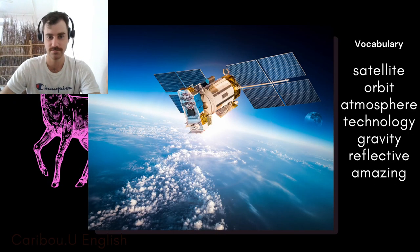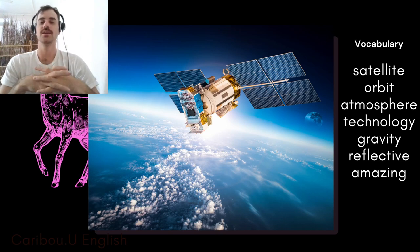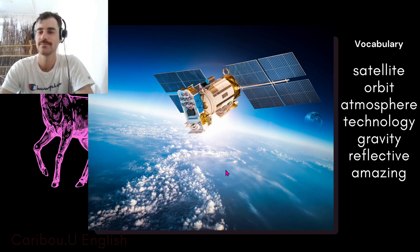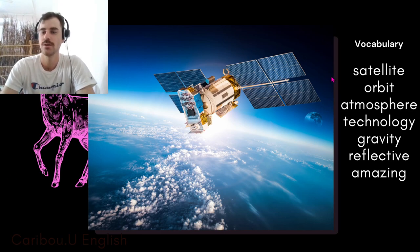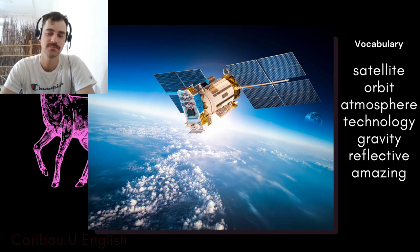The next picture is also on the theme of space, but it has some new words: satellite, orbit, atmosphere, technology, gravity, reflective, amazing.